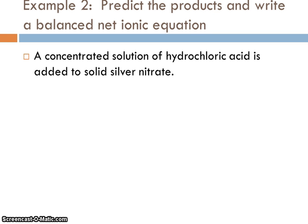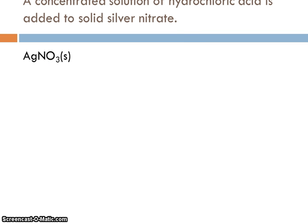So let's go on and do a second example. We're going to predict the products and write a balanced net ionic equation for this reaction. A concentrated solution of hydrochloric acid is added to solid silver nitrate. Well, reading that through again, oh, I've got a concentrated solution, right? Oh, that's probably a ligand of hydrochloric acid. We know hydrochloric acid has chloride ions. So that must be the ligand of chloride. And silver nitrate, well, it's got silver, which we know is a common metal that can form complex ions. So this is definitely a complex ion situation. So, oh, sorry that got cut off at the top, but that's okay. We had solid silver nitrate. It was solid initially.